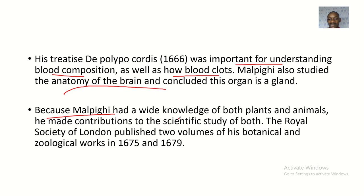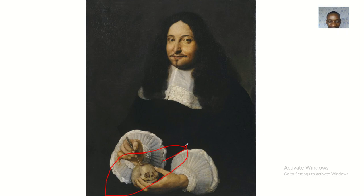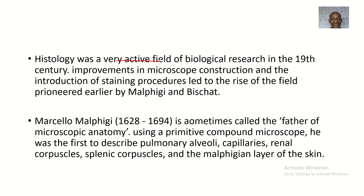Because Malpighi had wide knowledge of both plants and animals, he made contributions to scientific studies of both. The Royal Society of London published two volumes of his botanical and zoological works in 1675 and 1679. In his portrait, he can be seen holding a human skull.